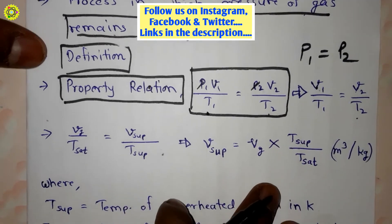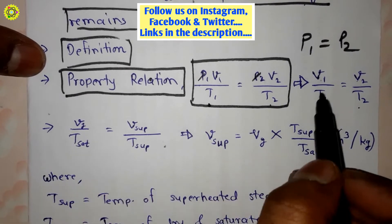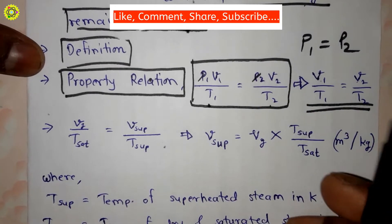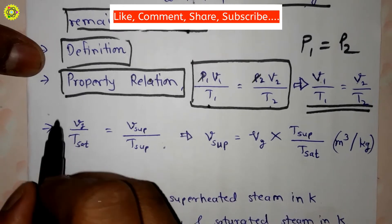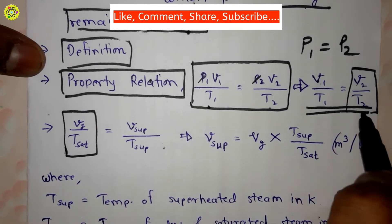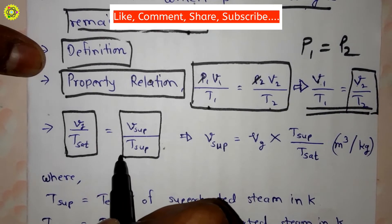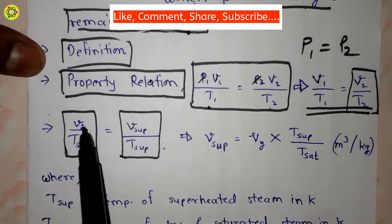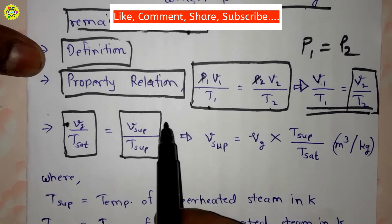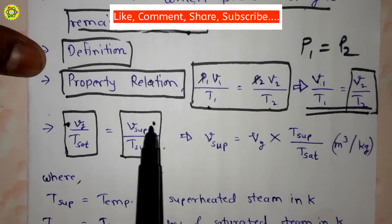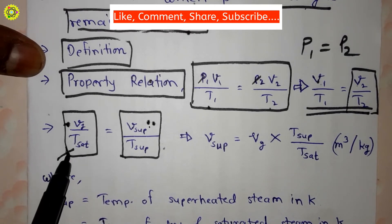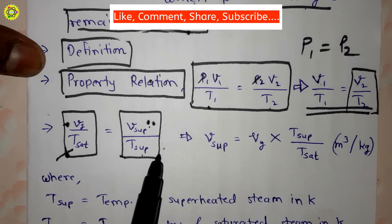We use this relation to calculate the specific volume of superheated steam. Here, v1/T1 is replaced by vg/T_sat, and v2/T2 is replaced by v_sup/T_sup. Here, vg is the specific volume of dry saturated steam, v_sup is the specific volume of superheated steam, T_sat is the temperature of dry saturated steam in Kelvin, and T_sup is the temperature of superheated steam in Kelvin.